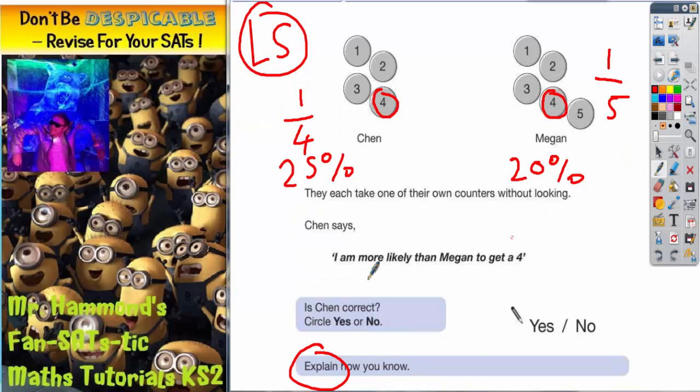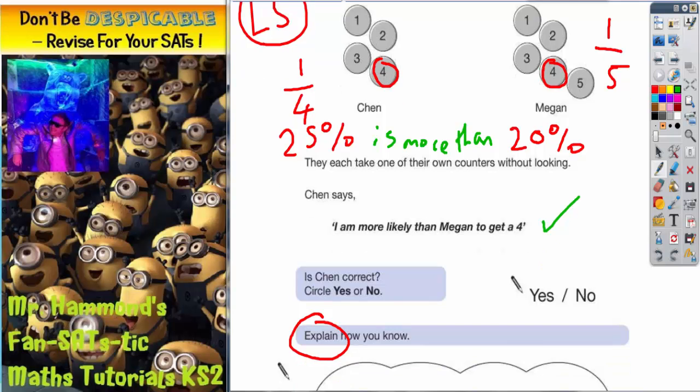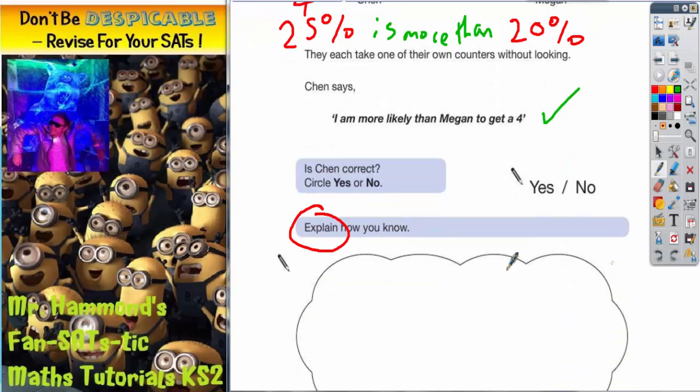So, Chen says, I am more likely than Megan to get a 4. Chen's got a 25% chance. Megan's only got a 20% chance. Because 25% is more than 20%, Chen is correct because she has a greater chance. So, you'd have to circle yes.